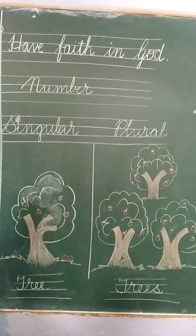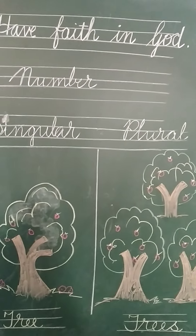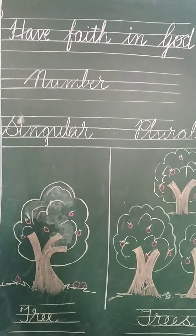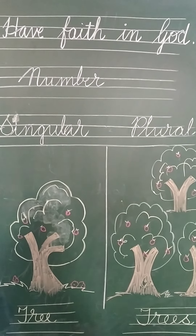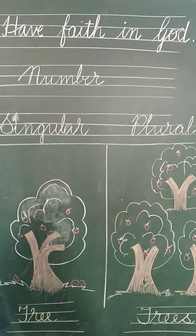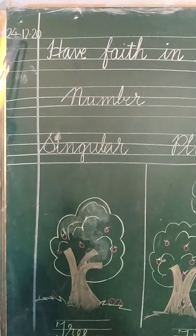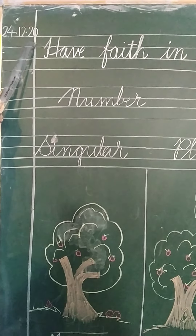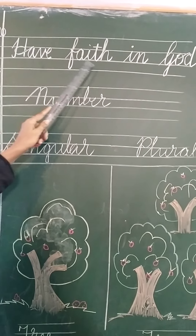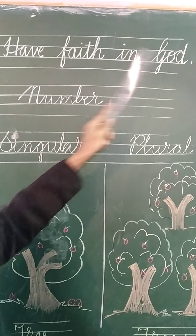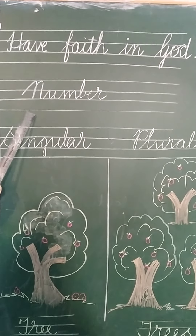Good morning everyone. Today is Thursday, so this is your English language period. Students, open your copy and start work. Everyone write down today's date: 24.12.20. The quotation is: have faith in God. Put the polystrop and draw the blue pencil line.